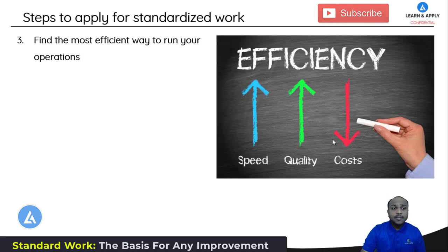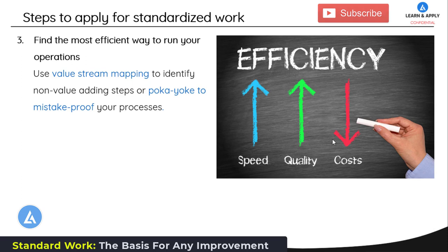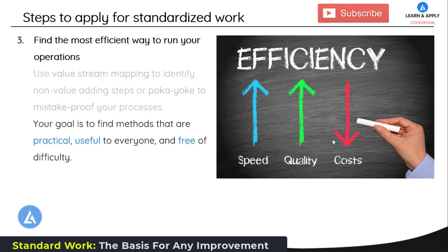The third step is to find the most efficient way to run your operations. You can use value stream mapping to identify non-value-adding steps, or Poka-Yoke to mistake-proof all your processes. Your goal is to find methods that are practical, useful to everyone, and free of difficulty so they can be maintained over a long period of time. If it is difficult for the operator, there will be an issue with sustaining it.